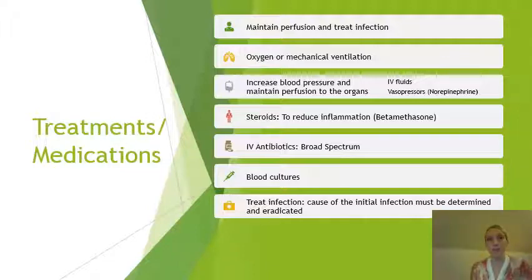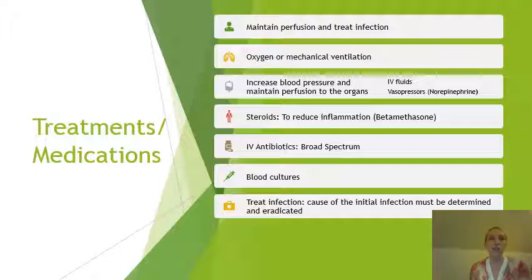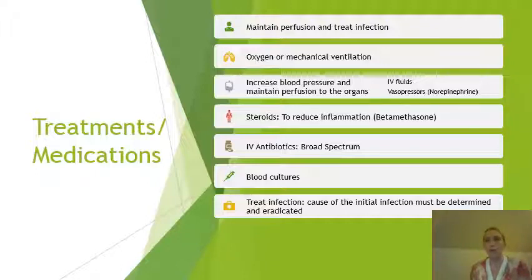Swift treatment is very important. Sepsis is a medical emergency — the patient would be hospitalized, often in the ICU, with the focus on maintaining perfusion and treating the infection. Start by thinking about the ABCs: airway, breathing, circulation. If blood pressure is down and heart rate is up, we need to help the body maintain tissue perfusion. Oxygen or mechanical ventilation may be needed depending on the severity of breathing issues. The patient needs IV fluids to increase blood pressure, and vasopressors such as norepinephrine may be used to constrict blood vessels and help increase blood pressure.